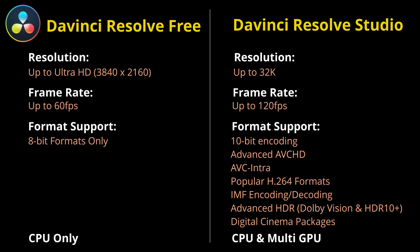Let's talk about the difference between the free and studio version of DaVinci Resolve, since this is what we'll be using for the entirety of this course. One of the main differences is resolution — the free version gets up to Ultra HD, while studio goes up to 32K. Frame rate is limited to 60 fps in the free version, whereas studio goes up to 120 fps. Format support is 8-bit only in the free version, with a plethora of formats in studio. Also, the free version only allows CPU use, whereas studio incorporates CPU and multi-GPU use.